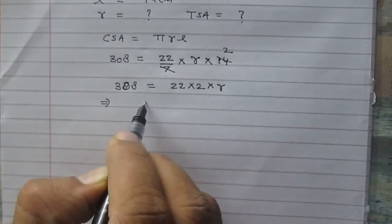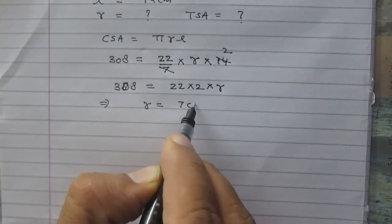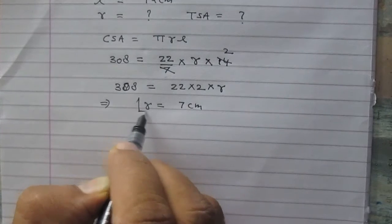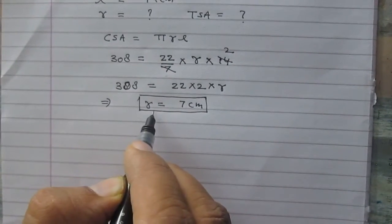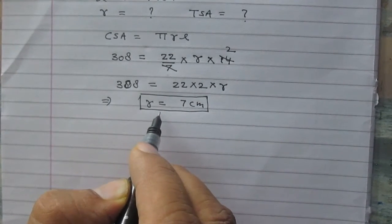Finally, you will get R = 7 cm. So radius of the base of this cone is 7 cm.